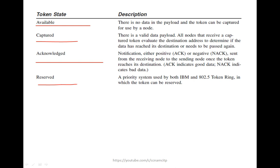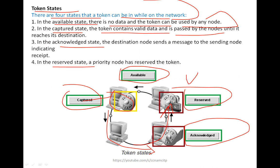In the available state, there is no data in the payload and the token can be captured by any node. In the captured state, there is valid data. In the acknowledged state, a positive or negative acknowledgement is sent from the receiving node. In the reserved state, the token is prioritized for a specific system, meaning that system will receive the data first.